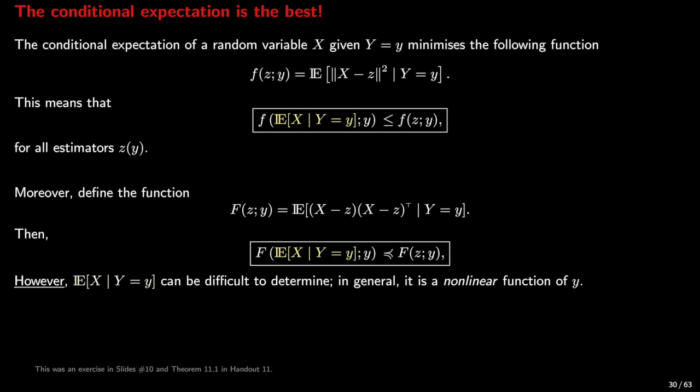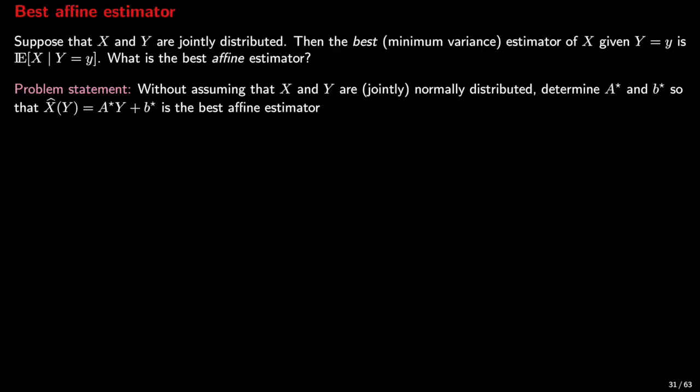Suppose all we can afford from a computational point of view is a simple, humble affine estimator. This leads to the question of the best affine estimator. Suppose that x and y are two jointly distributed random variables. We know that the best, that is the minimum variance estimator of x given that y equals little y, is the conditional expectation. We ask: what is the best affine estimator? Without assuming normality, we need to determine a matrix A* and a vector B*, such that the estimator x-hat of y equals A* times y plus B* is the best affine estimator.